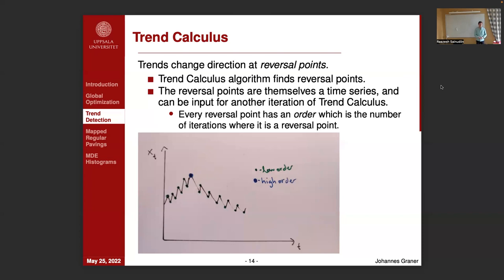What we are really after are the points where trends change — for example, going from an upwards trend to a downward trend. These are called reversal points. Each of the reversal points is still a point of the original time series, so if you take all of the reversal points they form a subsequence of your original time series, which can then be fed back as input for another iteration of the Trend Calculus algorithm. This brings us to the concept of reversal order, which is the number of iterations where a point is a reversal point. A low order reversal indicates a short term trend change, while a high order reversal corresponds to changes in much longer term trends.